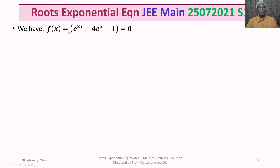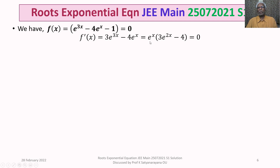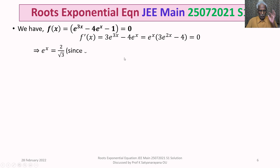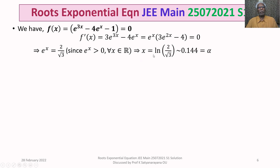For f(x) = e^(3x) - 4e^x - 1 = 0, we differentiate: f'(x) = 3e^(3x) - 4e^x = e^x(3e^(2x) - 4). Since e^x is never zero, f'(x) = 0 gives e^(2x) = 4/3. Therefore e^x = 2/√3 (taking the positive value, since e^x > 0 for all real x), and x = ln(2/√3), approximately 0.144.